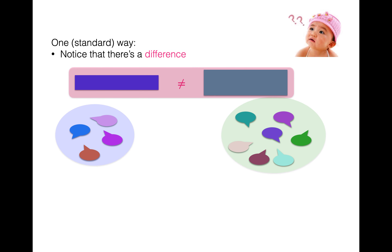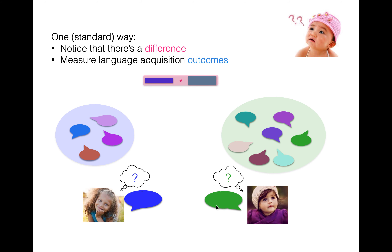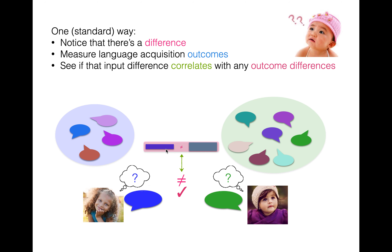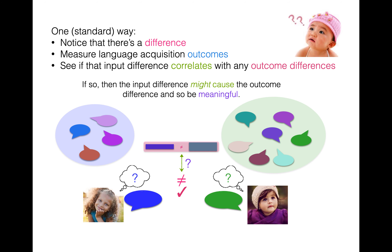Now let's talk about a standard way to detect developmentally meaningful differences. First, notice that there's a difference — this one does not equal that one. Then measure language acquisition outcomes: the things kids say, or the knowledge they have based on behaviors like what they comprehend in certain situations. Then you see if that input difference correlates with any outcome differences. Note this means the input difference might cause the output difference and so be meaningful, but at the end of the day it's correlational — we don't know that for sure, we just know they are related.